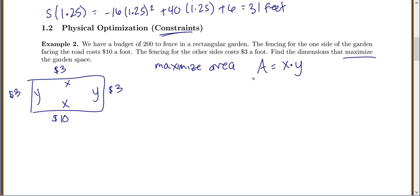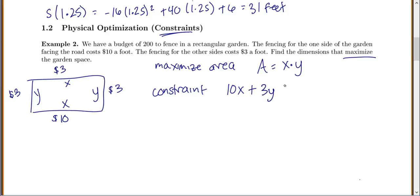We'd find the maximum by taking the derivative, but we can't do that with more than one variable. So we use the constraint: our budget of $200. The cost for the perimeter is 10x for the road side, plus 3y and 3x for the other sides, plus 3y again, and that has to equal 200. So now we have two equations — the area equation and the constraint equation — which makes this completely new from anything we've done before.